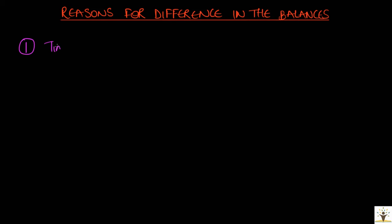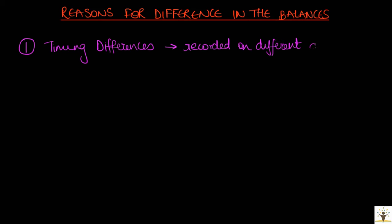Timing differences are transactions which are recorded in the cashbook and the bank statement on different dates. Hence, between these dates, the closing balance of the cashbook and the bank statement may not be the same. There are two types of timing differences.